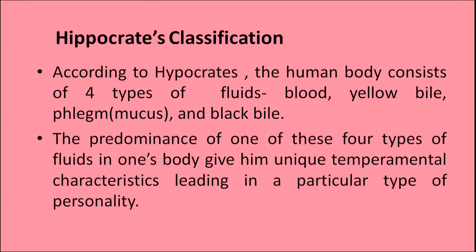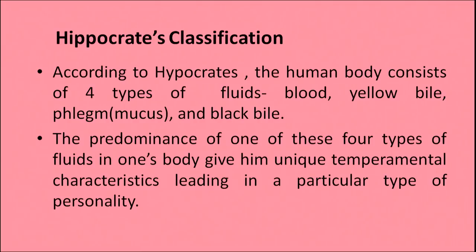Next is the classification given by Hippocrates. According to Hippocrates, the human body consists of four types of fluids: blood, yellow bile, phlegm and black bile. The predominance of one of these four types of fluids in one's body gives a person unique temperamental characteristics, leading to a particular type of personality.